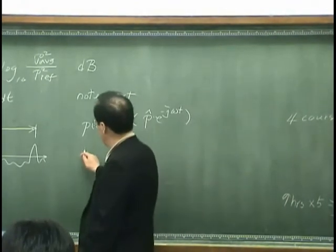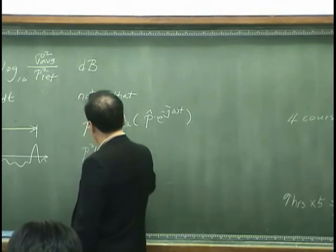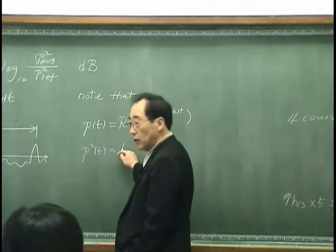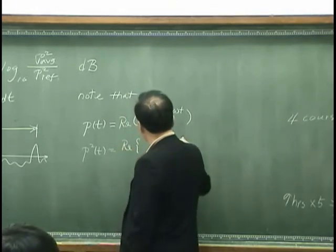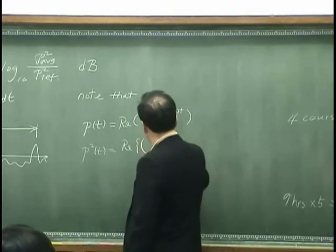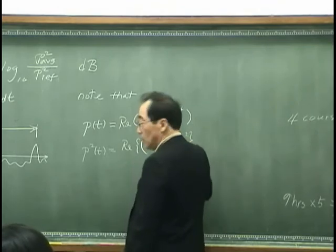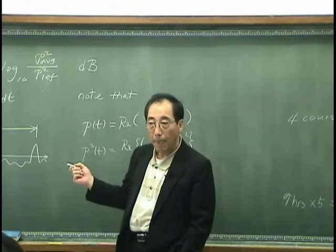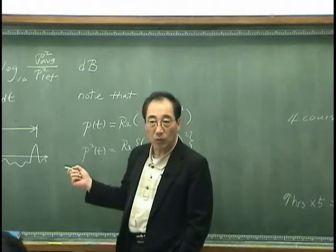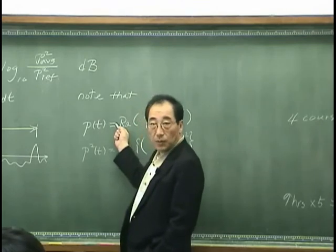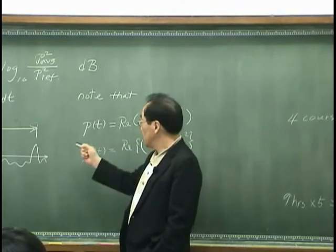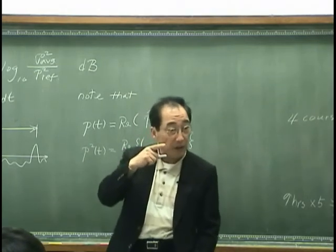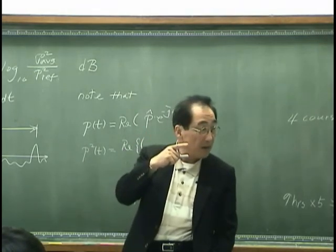Then, you may write, P square T is, what? What is it? Real part of, is it correct? It is not correct, because this is a linear operator, and the squaring things is not linear operator, so you have to be very careful.